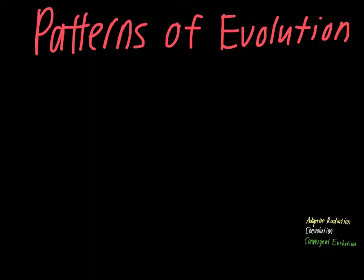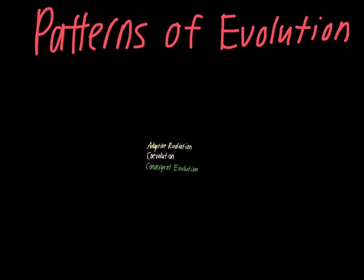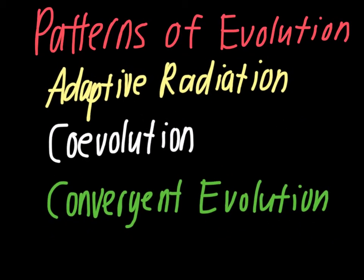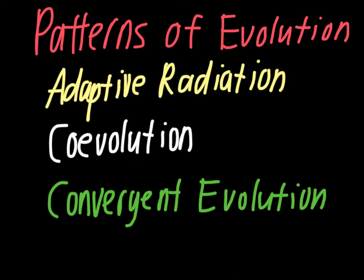This video is the last one from chapter 15 and deals with some of the patterns of evolution we've been talking about this chapter. There are three main things we'll discuss: adaptive radiation, which we've talked about a little bit already and you did a simulation on the computer involving that idea; co-evolution, which has been referenced in a few videos; and convergent evolution, which we've also referred to already.